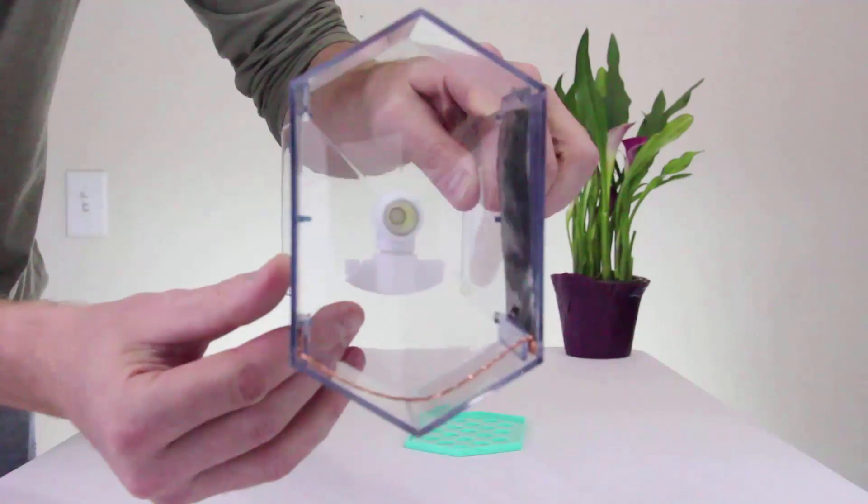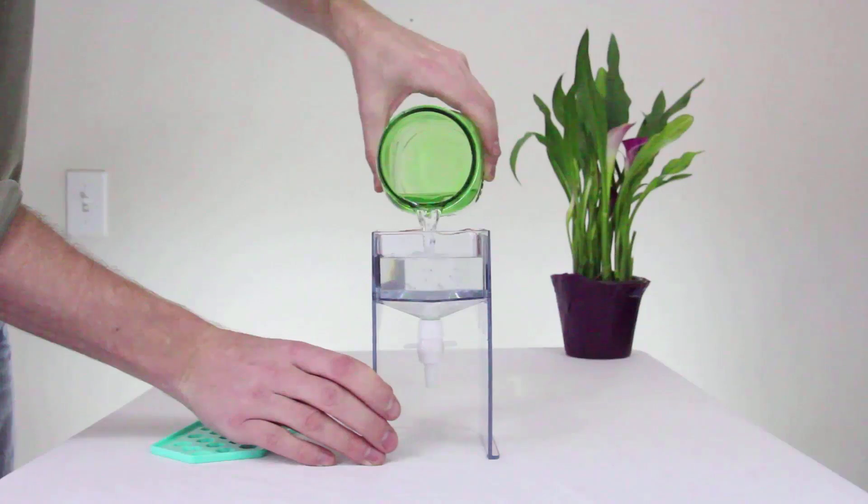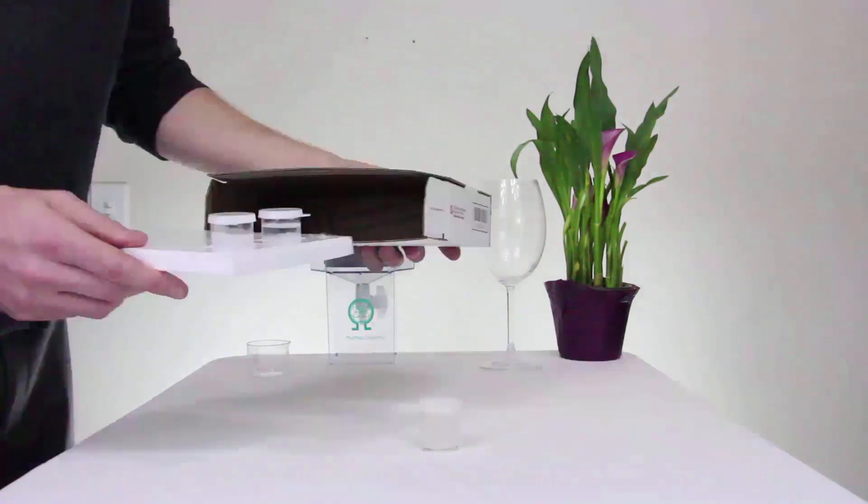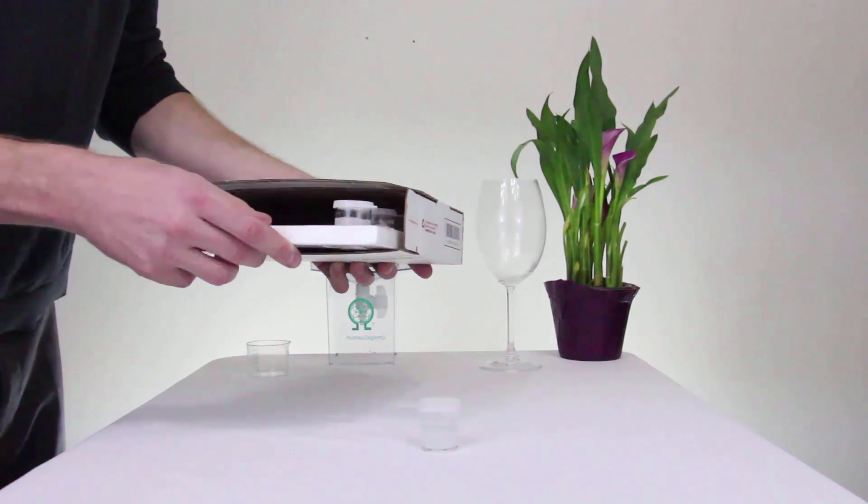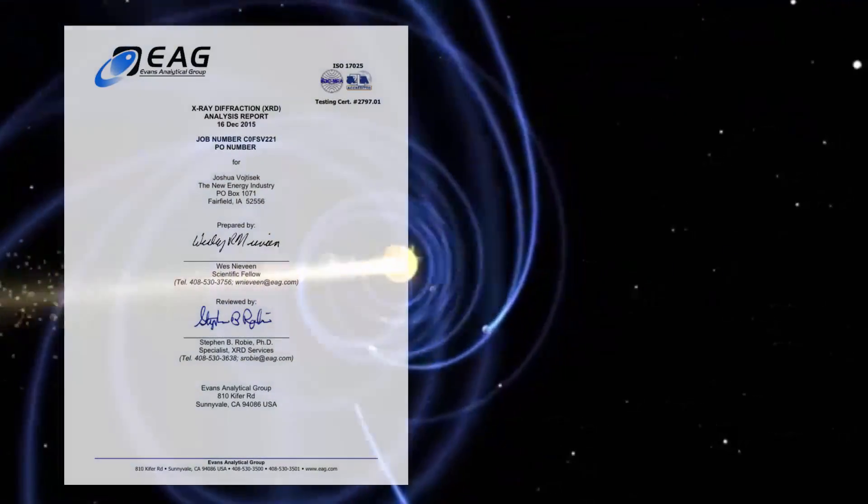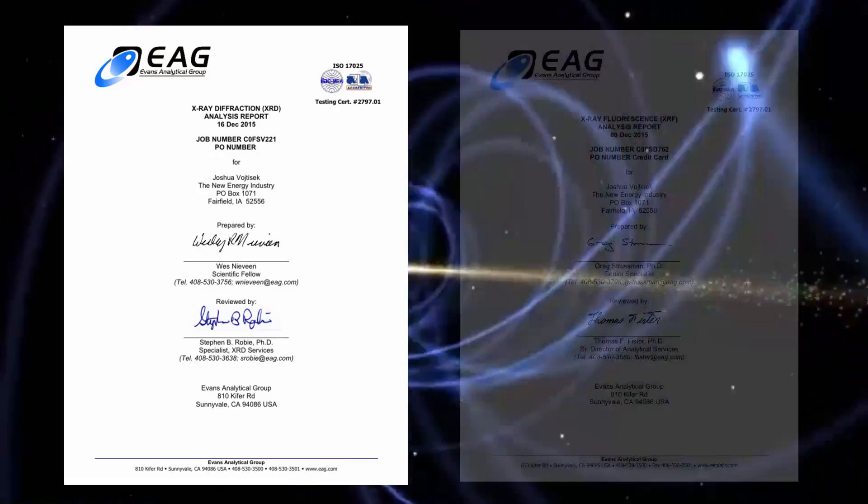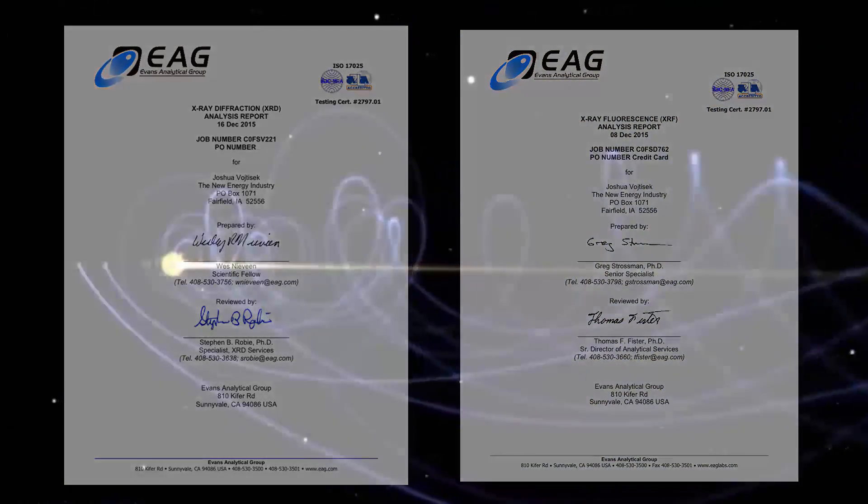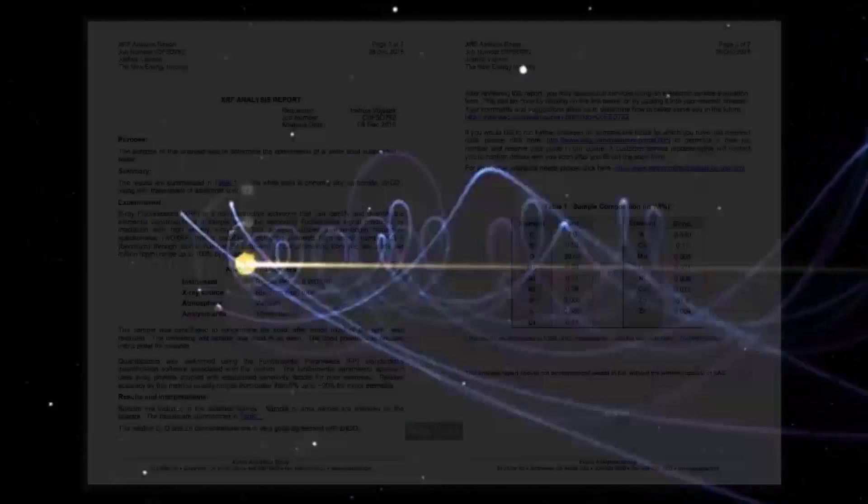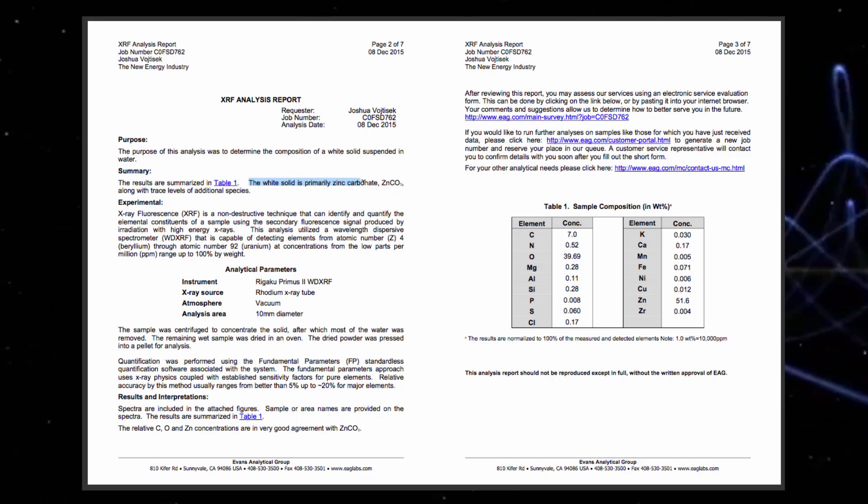I purchased one of Keshe's GANS CO2 collection kits, made some of this new material, and shipped it to a laboratory to have it tested. The lab conducted an X-ray diffraction to look at its atoms, as well as an X-ray fluorescence to see its compounds. After $1,000 of professional atomic testing, the results are clear.